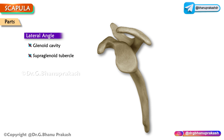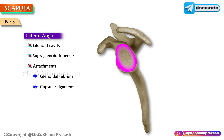The lateral angle has the following attachments. The glenoidal labrum is attached to the margins of the glenoid cavity to deepen it. The capsular ligament of the shoulder joint is attached to the margins of the glenoid cavity outside the labrum and also encloses the origin of the long head of the biceps brachii.